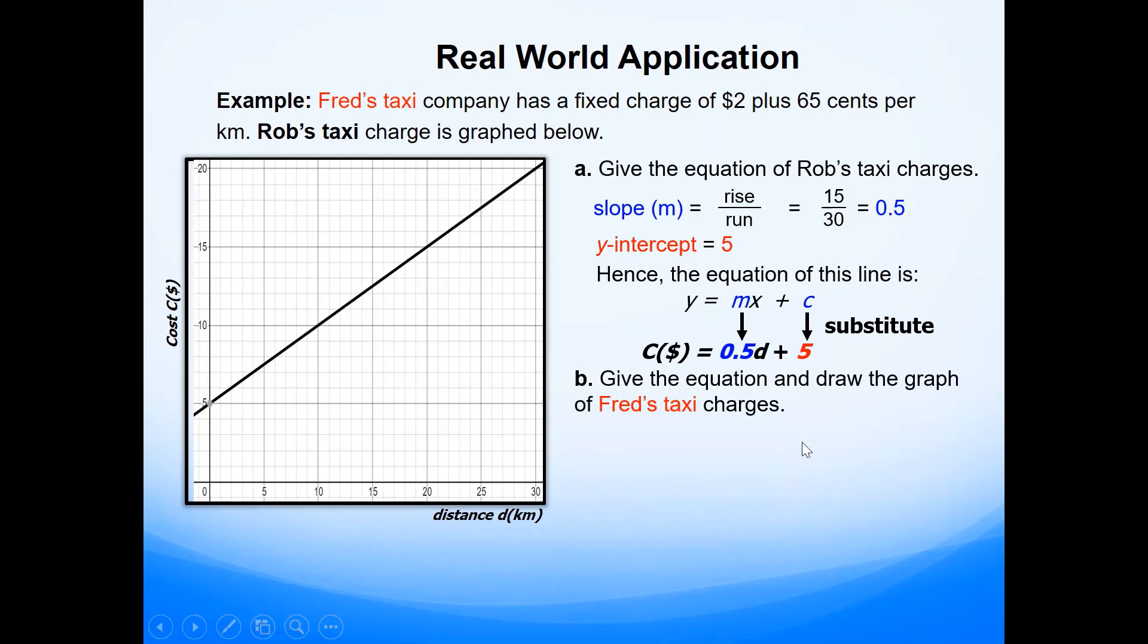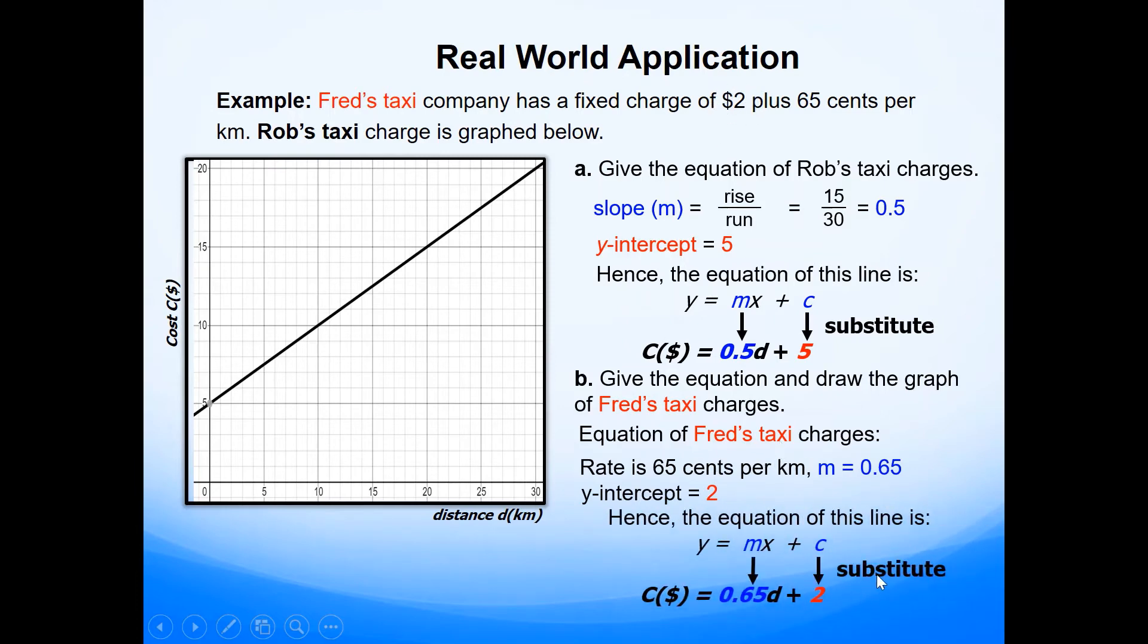Next question. It says, give the equation and draw the graph of Fred's taxi. So Fred's taxi is charging 65 cents per kilometer, and the fixed charge is $2. So rate is 65 cents for every kilometer. Remember, change cents to dollars, because we are looking at cost function in dollars. So 65 cents is 0.65. The y-intercept value is 2, because 2 is the fixed charge. So the cost is given by 0.65d plus 2.